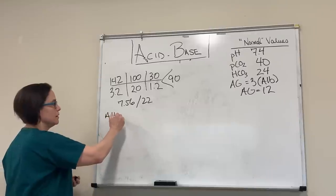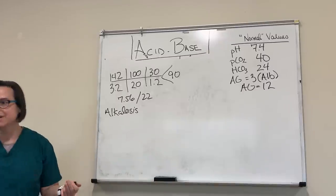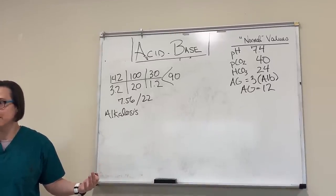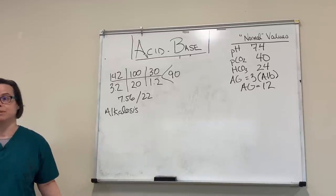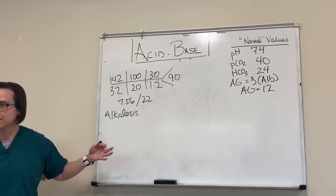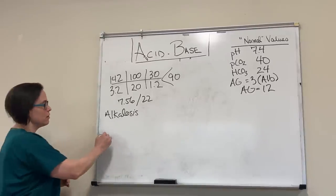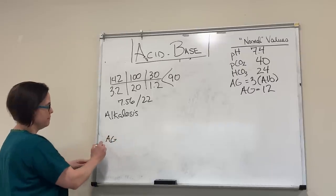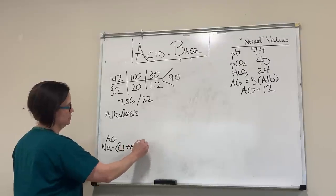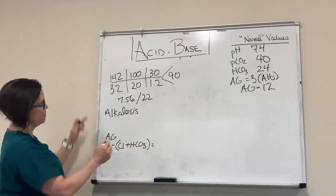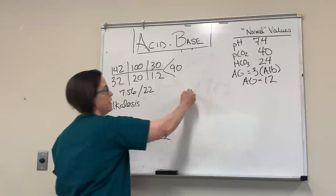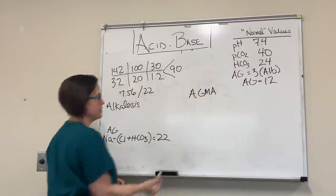It's an alkalosis — and I haven't given you equations for alkalosis yet. Here's the trick: if we have an anion gap, we have an anion gap metabolic acidosis, so we can bypass the pH step and go straight to the anion gap. Anion gap: sodium minus chloride minus bicarb equals 22. So we know right off the bat we have an anion gap metabolic acidosis.